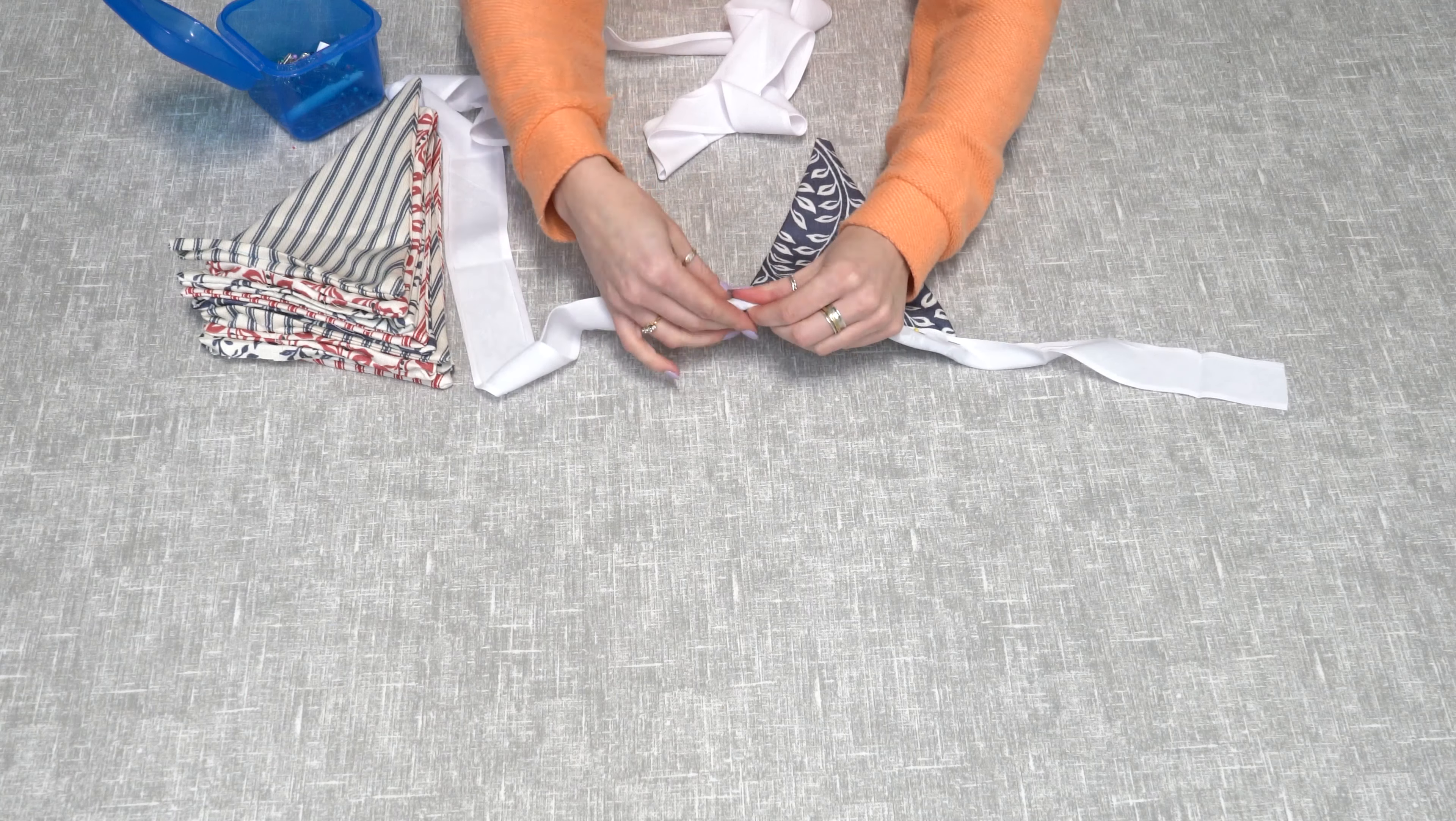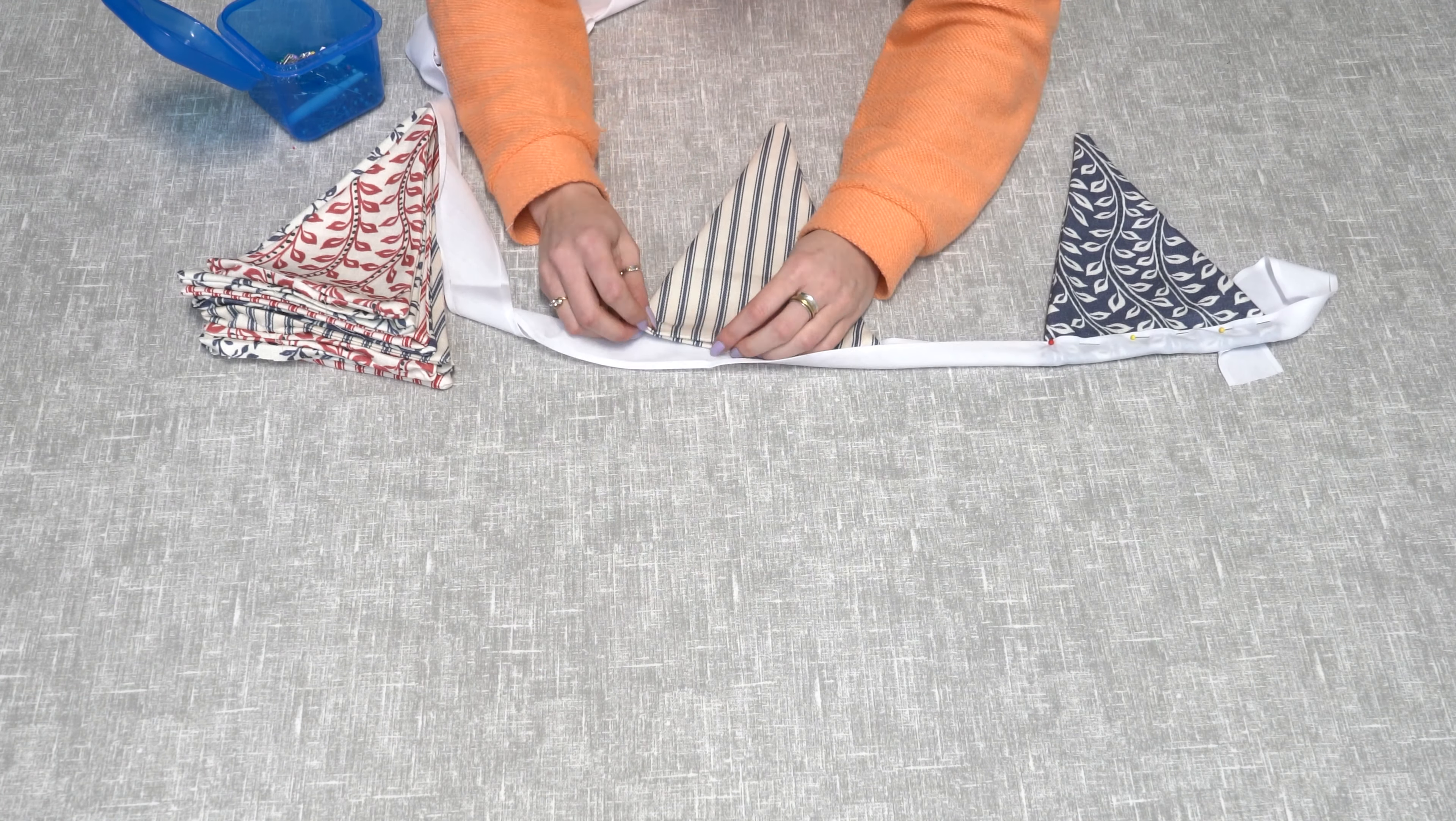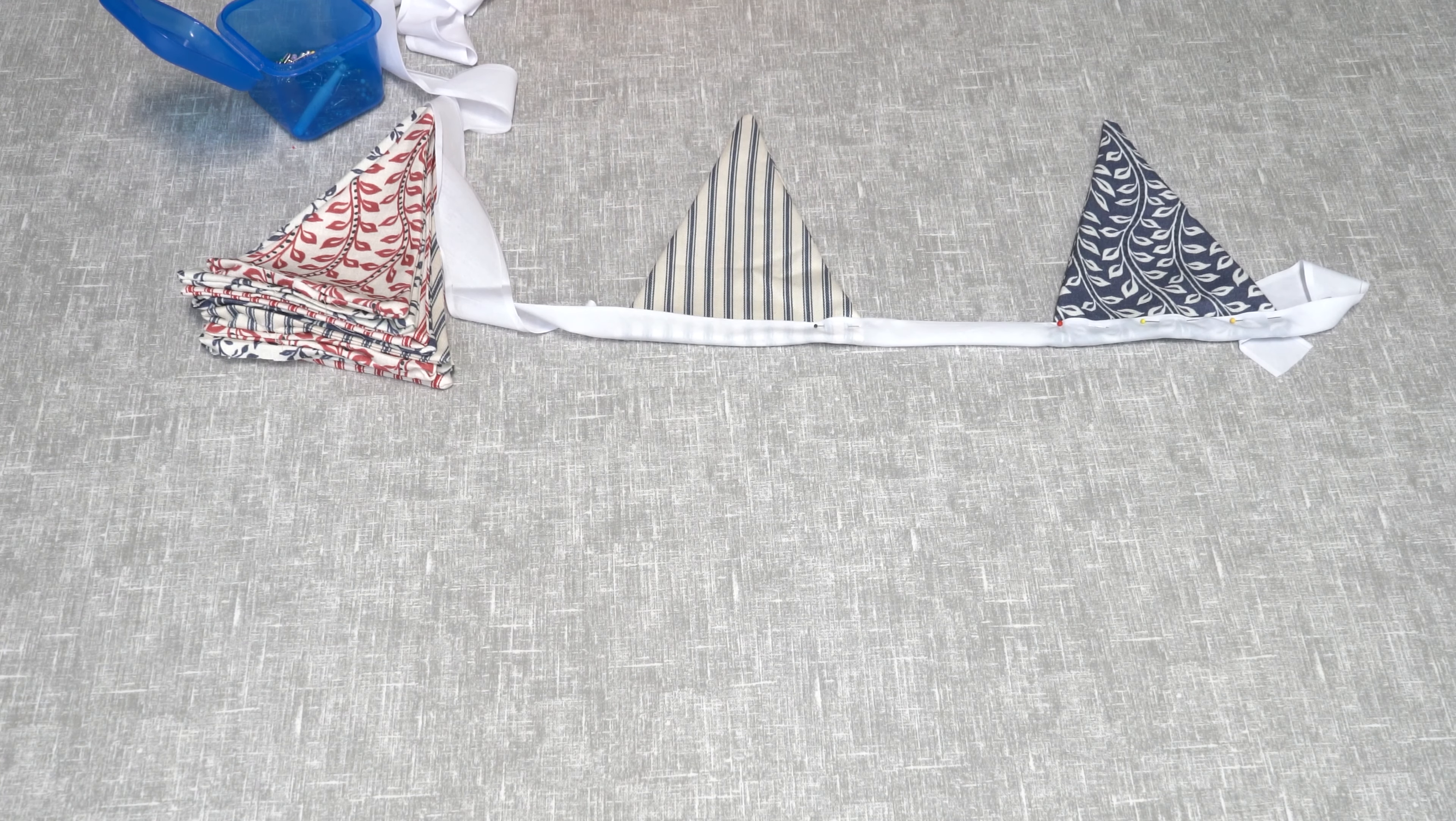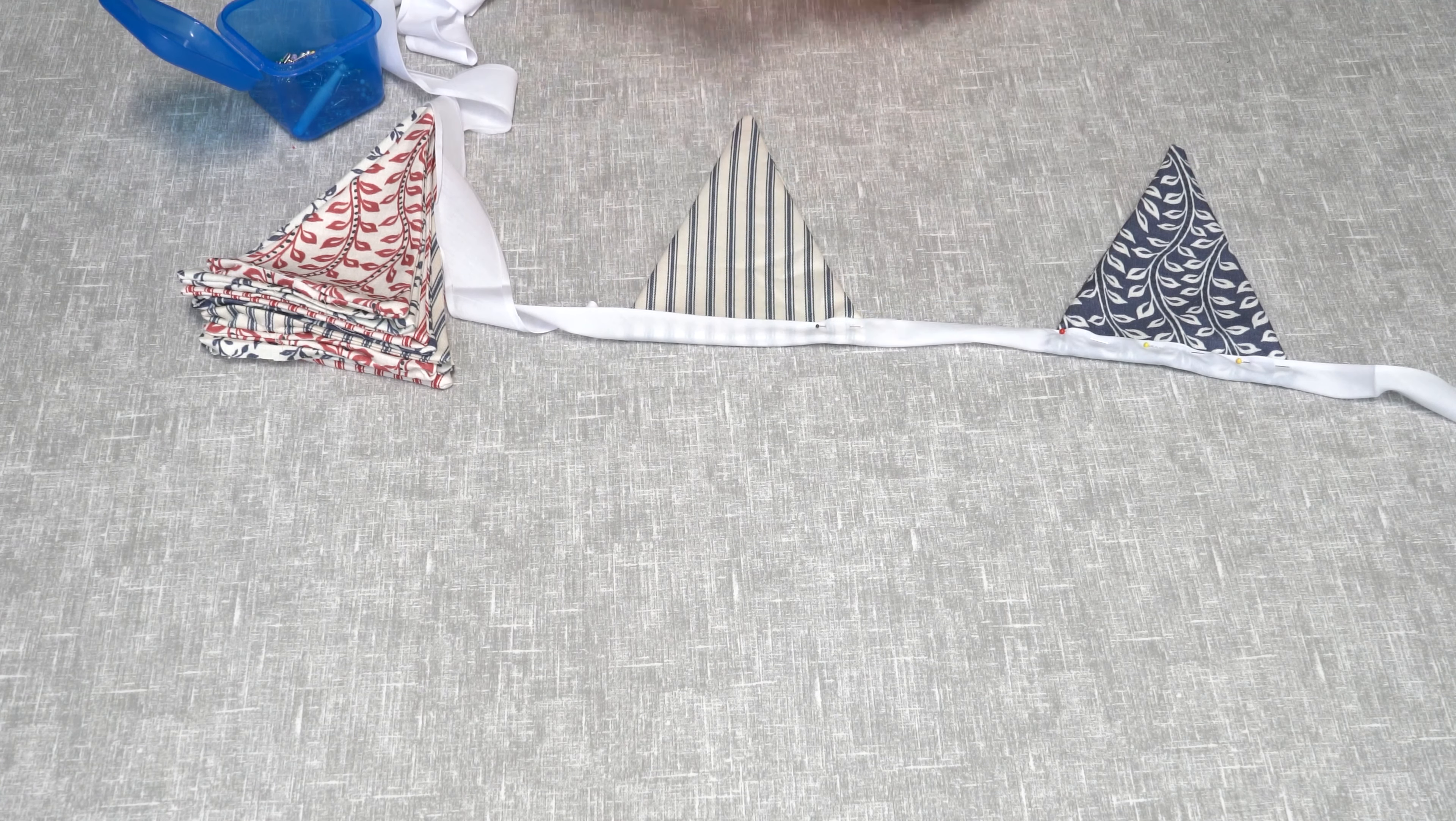Now that you've done the first one, you can space out your bunting however far apart you like. We're going to use about 11 centimeters between each one, and you can repeat this for the rest of them. Now just stitch along the entire top edge of the bunting.